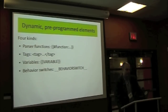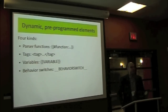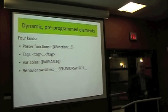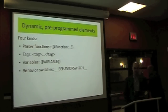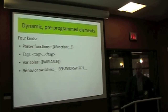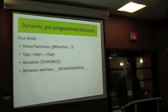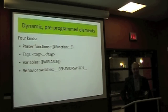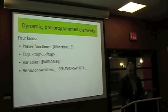There are dynamic pre-programmed elements defined both by core MediaWiki and by extensions. There are four kinds: parser functions, tags, variables, and behavior switches.